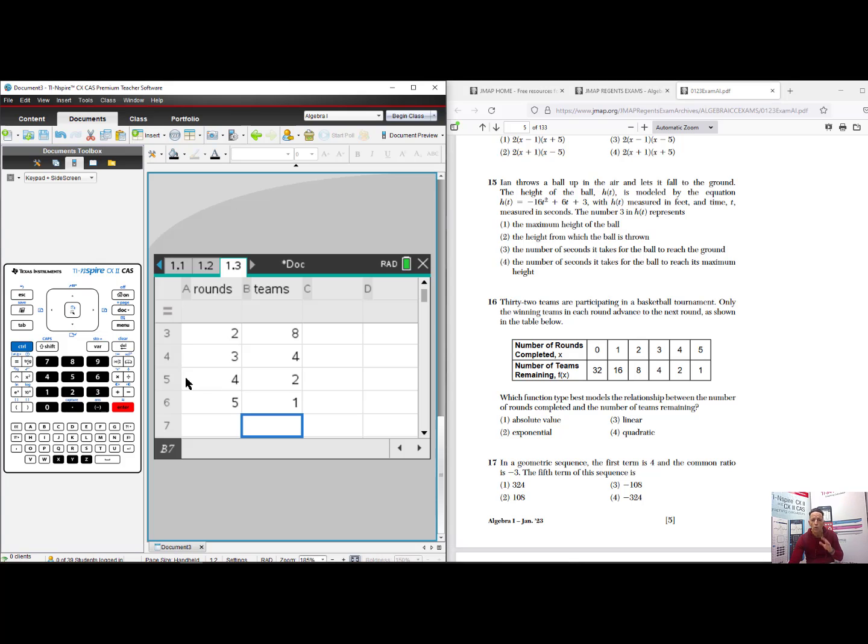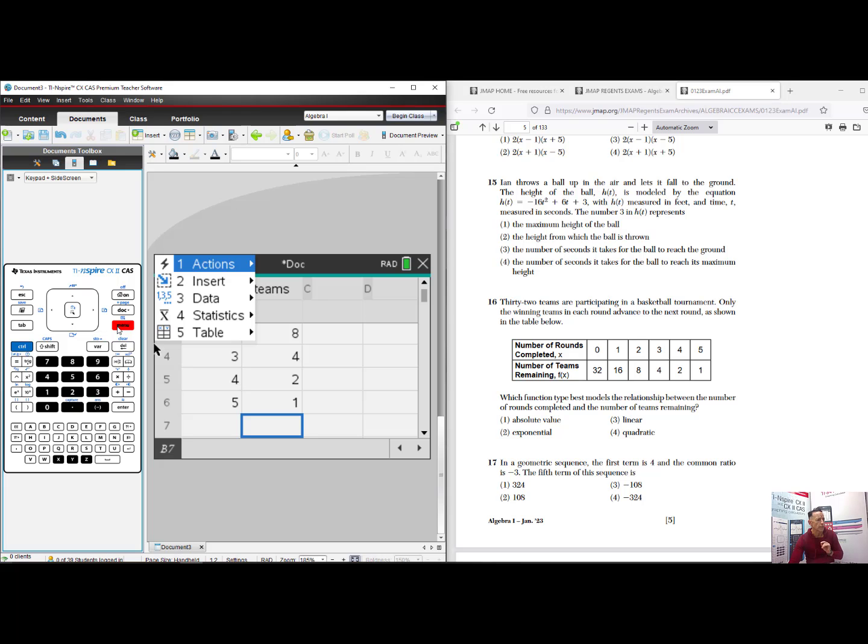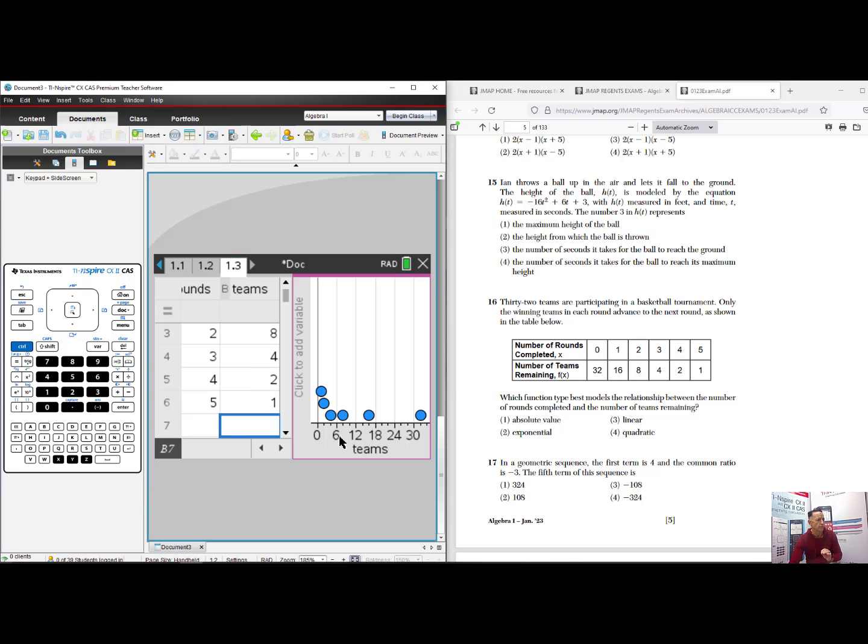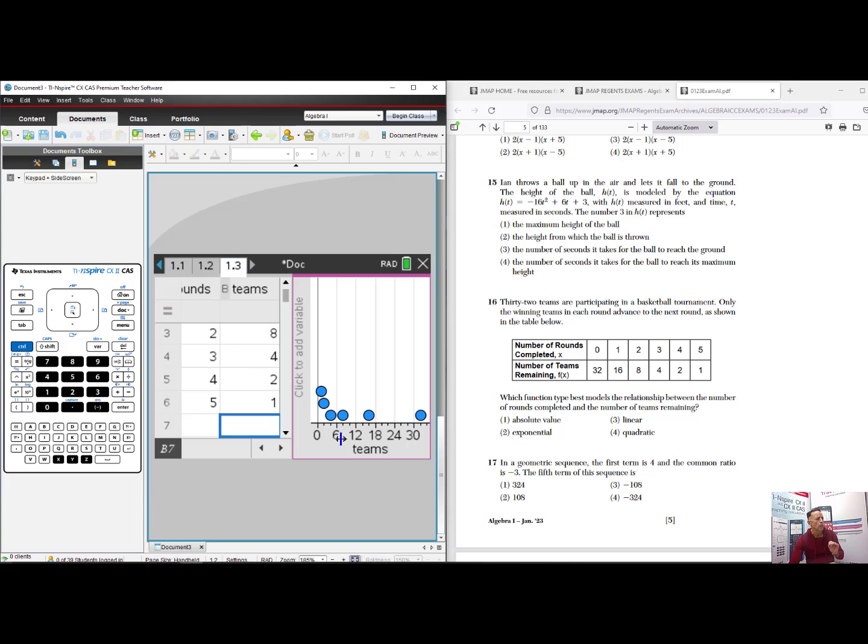I just need a quick sketch of this. So I'll go to Menu, select number 3, Data, and there is a Quick Graph feature. If I just want to visualize the data, I'll select Quick Graph. OK. I'm going to make the rounds my independent variable, and I'll make the teams my dependent variable. And that right there looks like an exponential decay. Answer 2.